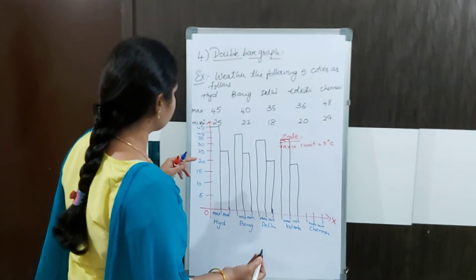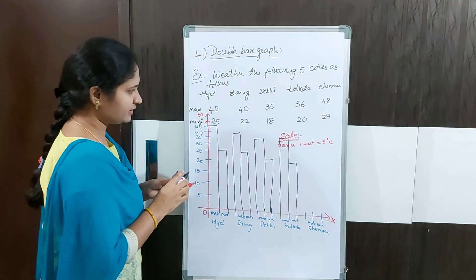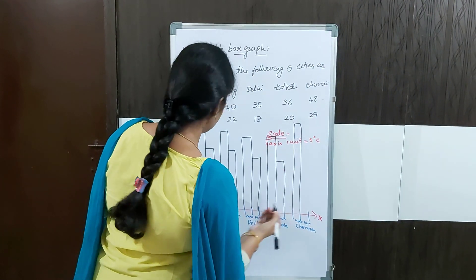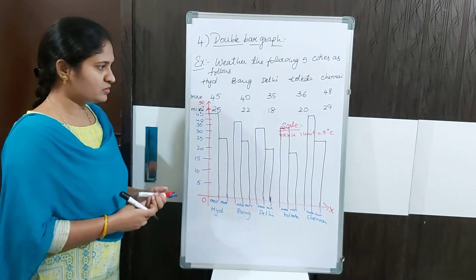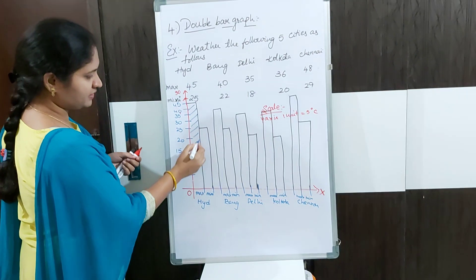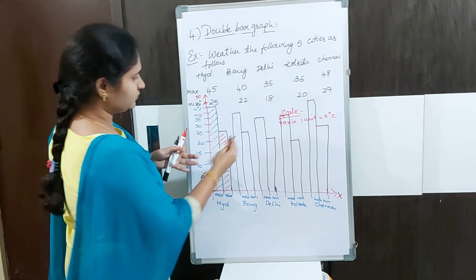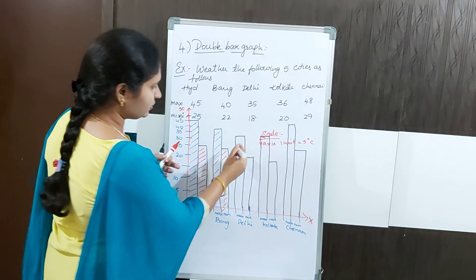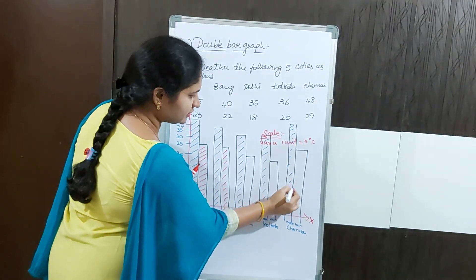The maximum temperature of Chennai is 48, so you can extend a little bit and take it as up to 50 degrees centigrade. The minimum is 29, so just less than 30. To specify maximum and minimum clearly, you can color them with different colors — maximum temperature in blue and minimum temperature in red. You will get a beautiful graph where you can compare both temperatures.